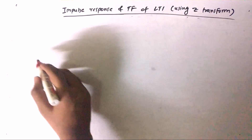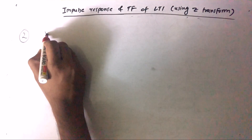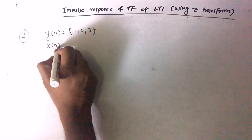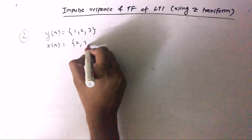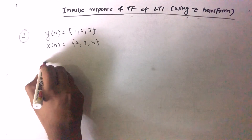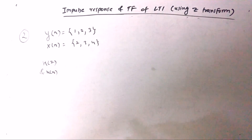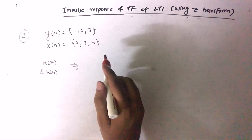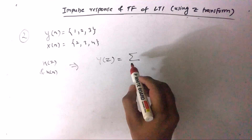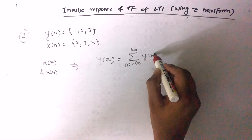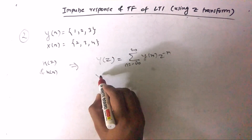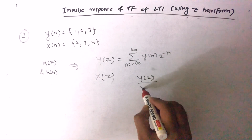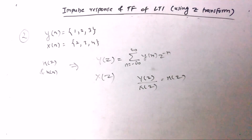The second variety of question: we are given Y(N) as a discrete sequence — say {1, 2, 3} — and X(N) as another discrete sequence — say {2, 3, 4}. We need to find H(Z) and H(N). We use the formula: Y(Z) = Σ (n = −∞ to ∞) Y(N) · Z^(−N), and similarly for X(Z). After finding Y(Z) and X(Z), we divide Y(Z) by X(Z) to get H(Z). This is the second variety of sum.